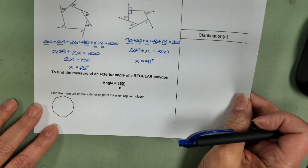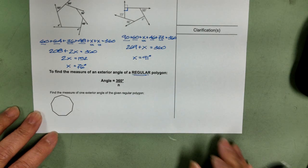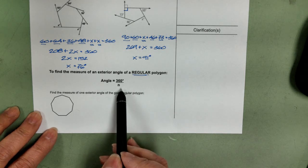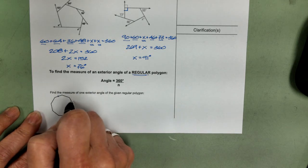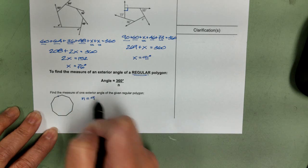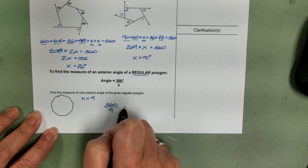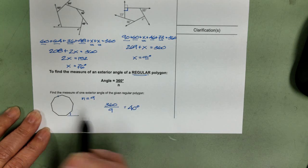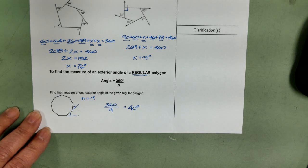Now, if we want to find the measure of an exterior angle of a regular polygon, again, a regular polygon with congruent sides and congruent angles, we're just going to take 360 and divide it by the number of sides. So I'm going to count the sides. 1, 2, 3, 4, 5, 6, 7, 8, 9. So in this case, n equals 9. I'm going to take 360, divide it by 9, and I get 40 degrees. So each one of these exterior angles is 40 degrees.